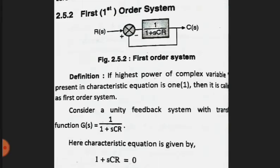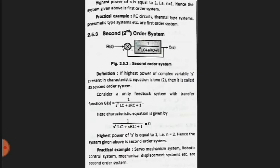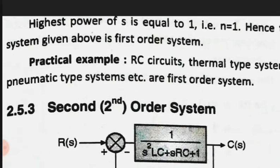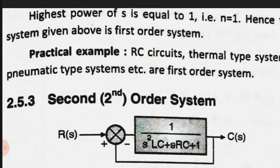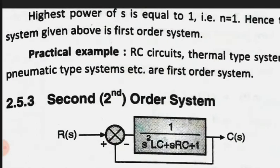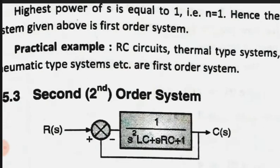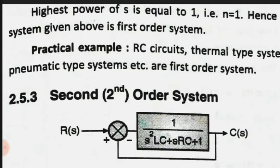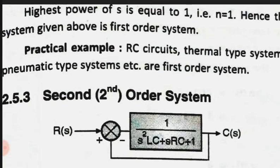We equate the characteristic equation from the denominator to zero, giving 1 + sCR = 0. Here the power of s is 1. The highest power of s is equal to 1, hence the system is the first order system. Practical examples of first order systems include AC circuits, thermal type systems, and pneumatic type systems.